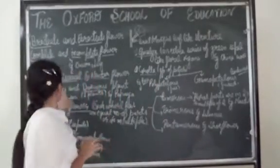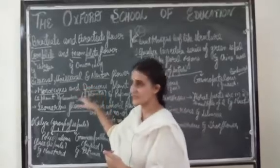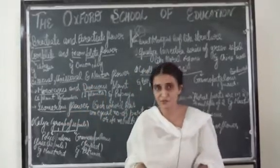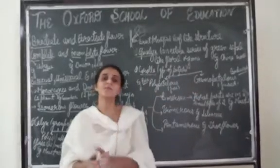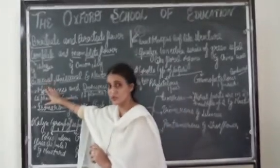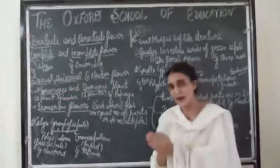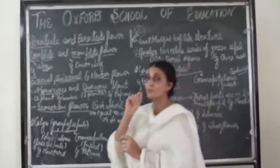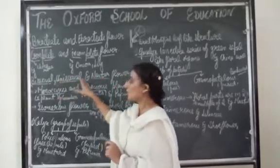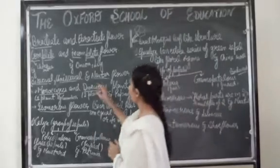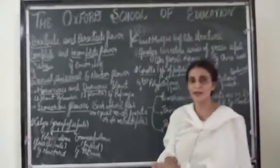The next terms are bisexual, unisexual, and neuter flower. Bisexual flowers are those which consist of both male and female reproductive parts — that is, the presence of both androecium and gynoecium. In the case of a unisexual flower, it will consist of either androecium or gynoecium — that means the presence of any one reproductive organ — and that flower is known as a unisexual flower. A neuter flower is one which lacks both androecium and gynoecium.